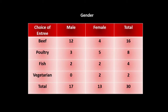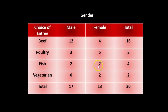The intersection of each row and column is called a cell. Let's say I want to know how many females preferred fish. I would look here in the column of females and the row of fish, and the intersection of female and fish is 2. So 2 out of the 30 people were females who preferred fish.